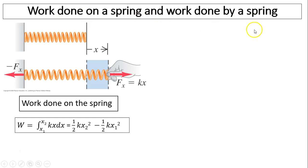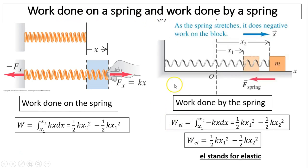So that's work done on a spring. What is work done by the spring? Work done by the spring should be the opposite. As the spring is moving to the right, the force exerted on the box by the spring is to the left as the block is going to the right. So the work is negative kx times dx, because the force and displacement are 180 degrees relative to each other. Therefore, the work done by the spring on the block equals one-half kx₁ squared minus one-half kx₂ squared.